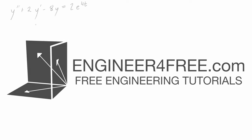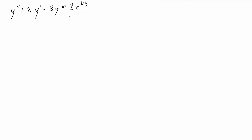Welcome back. In this video we are going to use the method of undetermined coefficients to find a particular solution to this differential equation, which is second order and non-homogeneous. We'll be able to get a particular solution, but also in this video I'm going to find a complementary solution, and then we can put both of those together to find the general solution as well. Finding the particular solution is the only part that classifies as the undetermined coefficients method, but it depends on what your professor might be asking for.